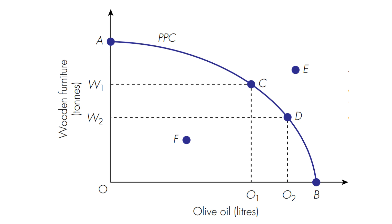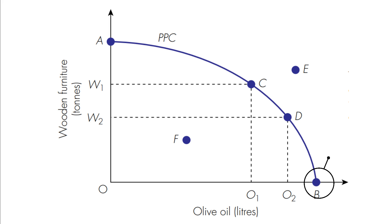Now let's have a look at the different points on the PPC curve. Point A shows all the resources are dedicated to the production of wooden furniture, and hence we are not producing any olive oil, because it is on the extreme left of the PPC curve. At point B, all the resources are dedicated to the production of olive oil, which means we are not producing any wooden furniture. At point C, W1 tons of wooden furniture is produced along with O1 liters of olive oil.